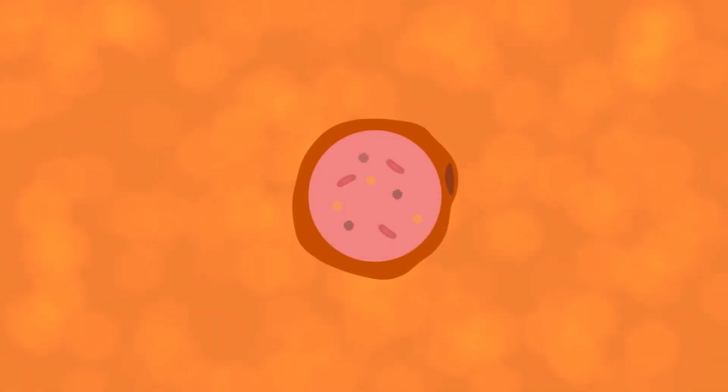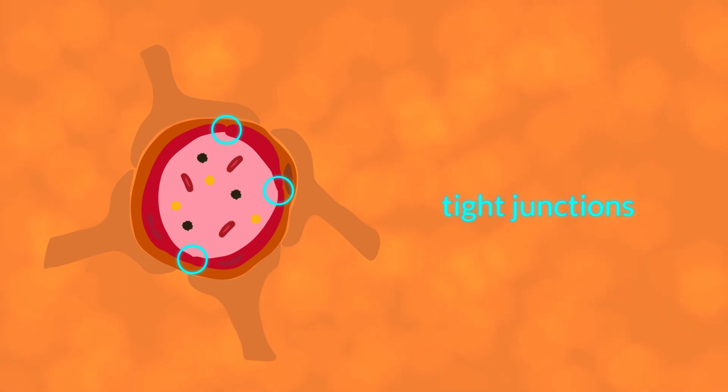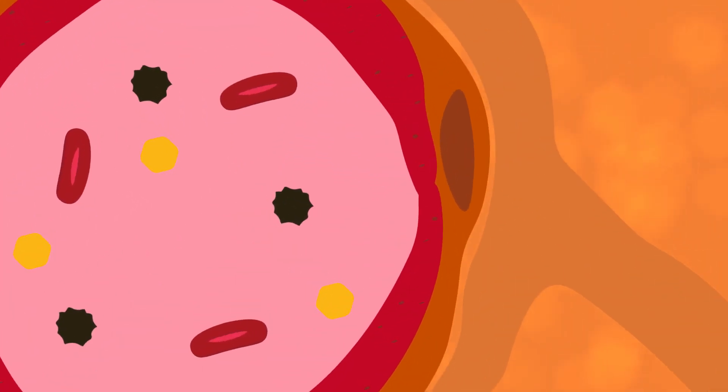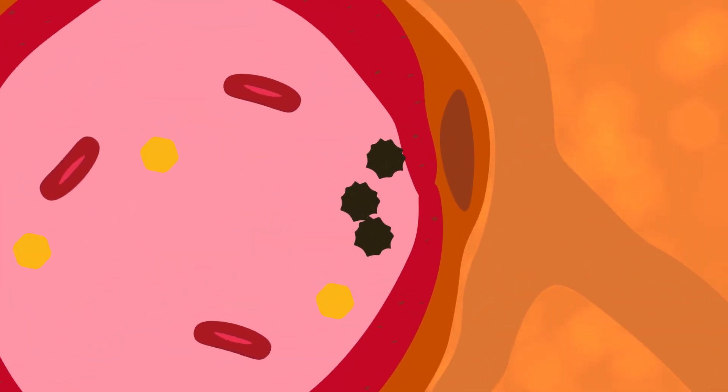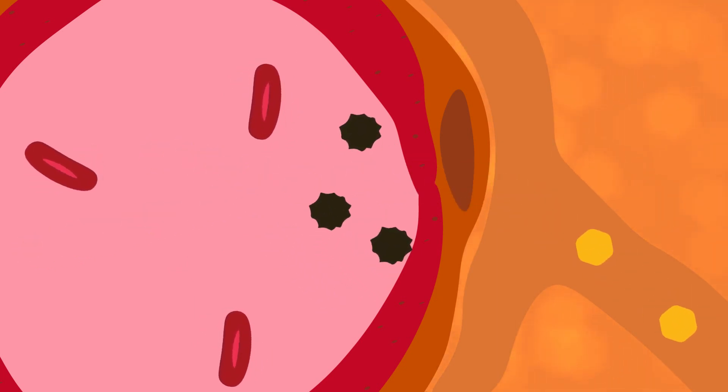...the blood-brain barrier has tight joints at the junctions where the endothelial cells meet. These tight junctions form a nearly impermeable boundary between the brain and the bloodstream, keeping out toxins and most pathogens, and ensuring that only desirable molecules crucial to brain function can pass through.